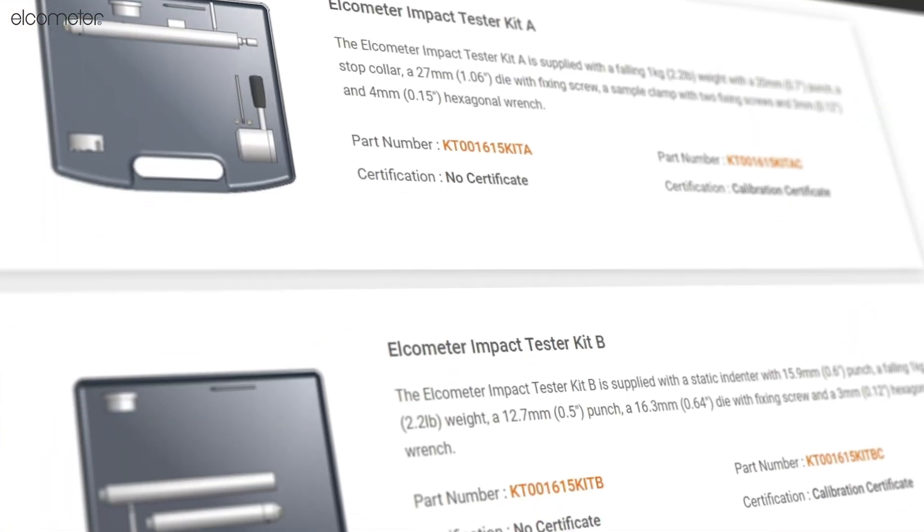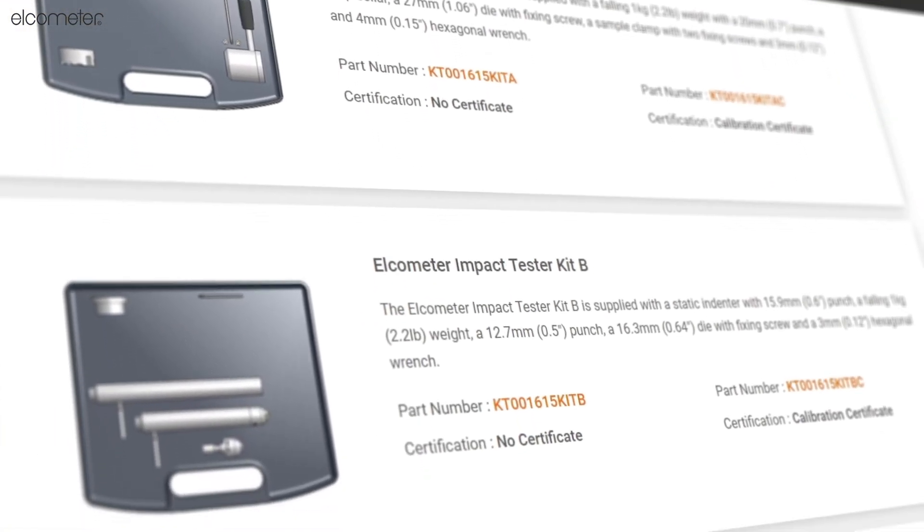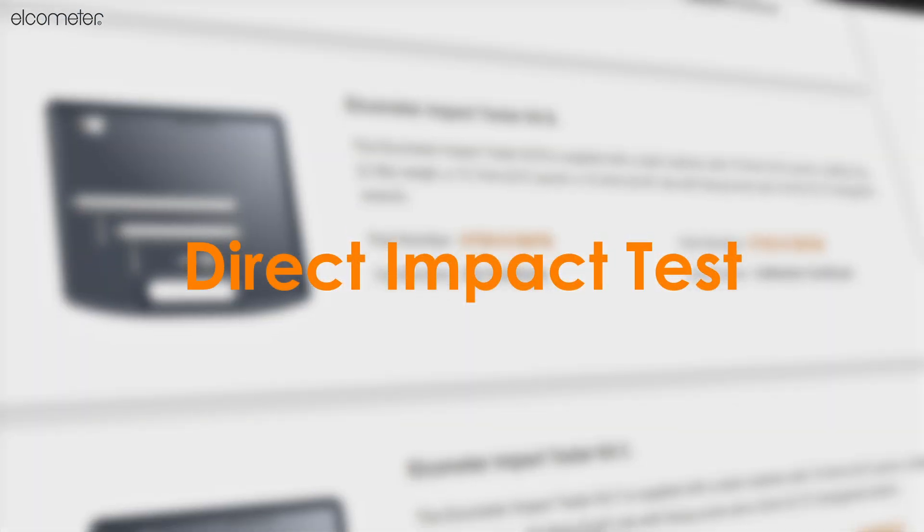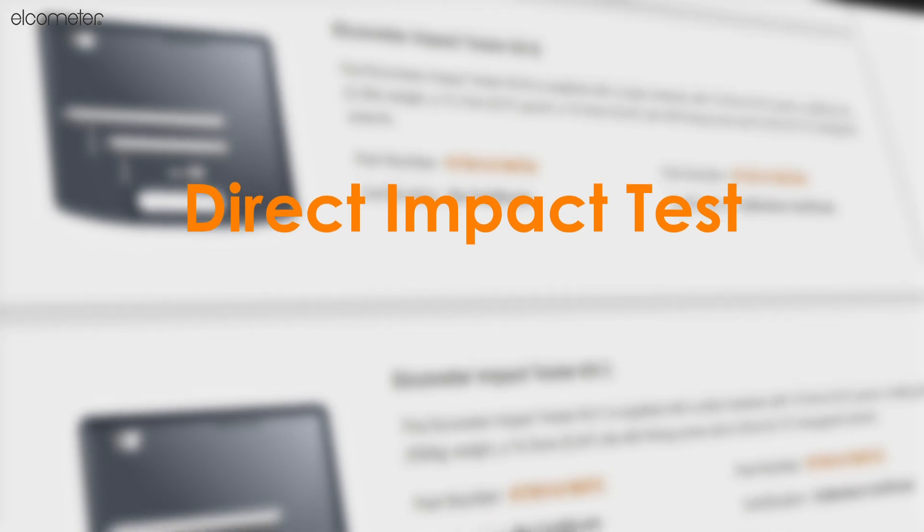Depending on the standards you are working towards, you have the option of 7 different kits providing functionality for testing towards various methods. Every available kit can be categorized as falling weight, known as direct, or resting weight, known as indirect.